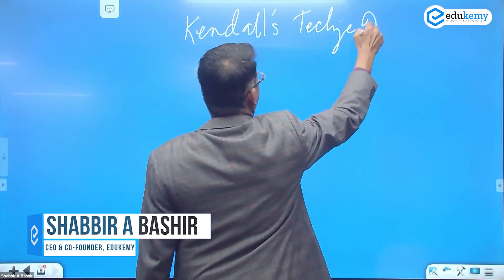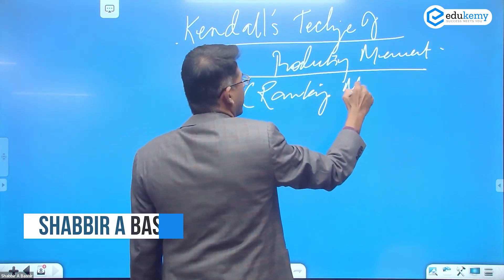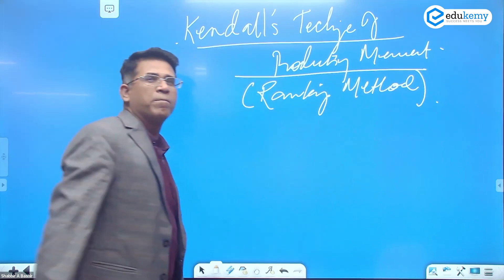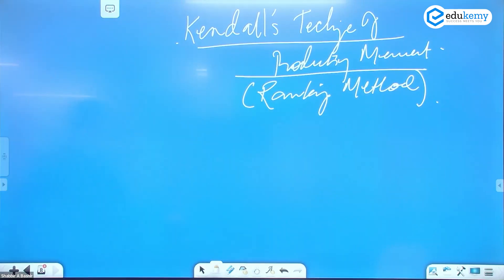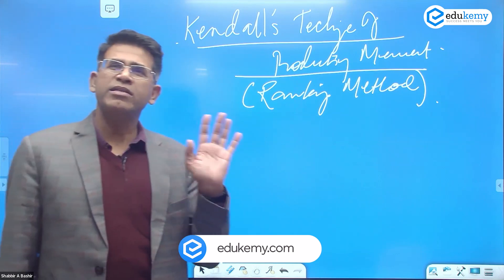Kendall's technique of productivity measurement is also called the ranking method. The good thing about these topics is that you don't have too much mathematics to do. You can write a paragraph explaining how it is done.